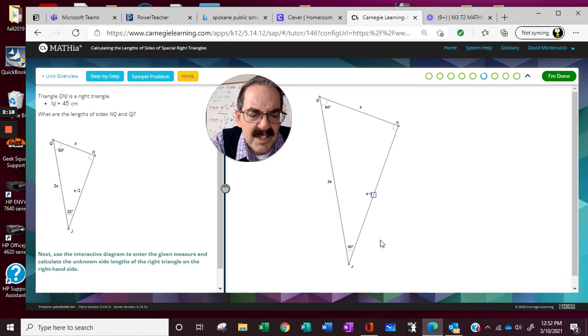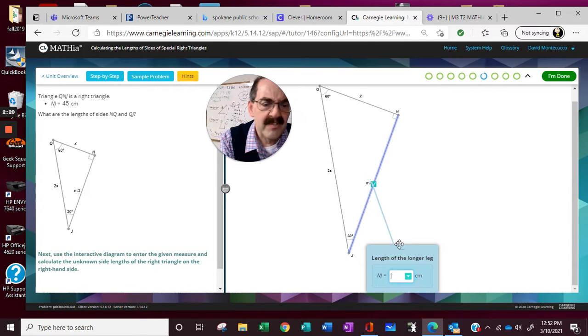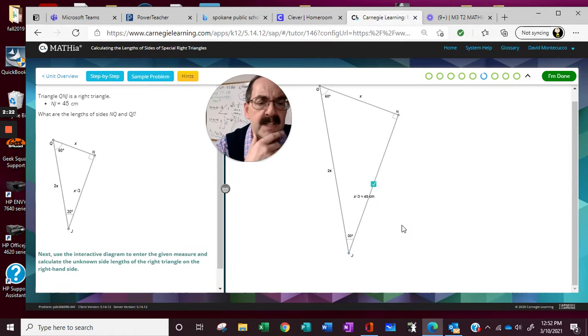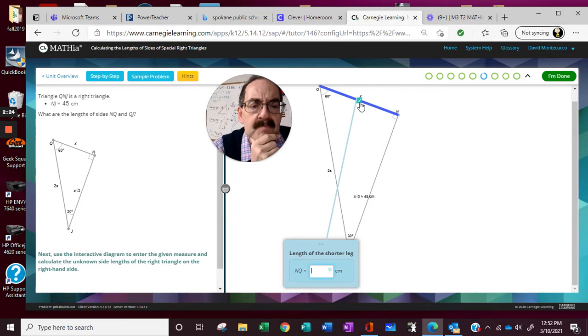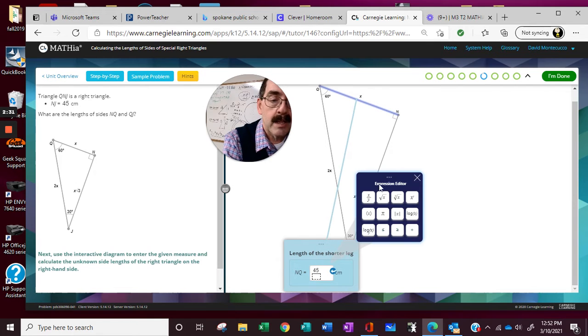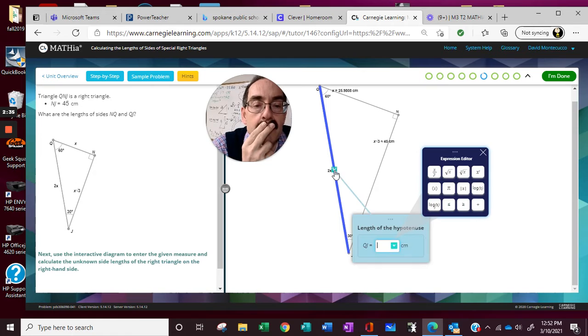45 for NJ. So we'll just type that one in because it's given, which means when we bring it back out, we got to divide it. So 45 divide by the radical 3. Then we just double it. 25.9808, double.